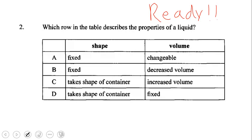We begin by reading the question and the question states the following: Which row in the table describes the properties of a liquid? Here we have a column for shape and here we have a column for volume.